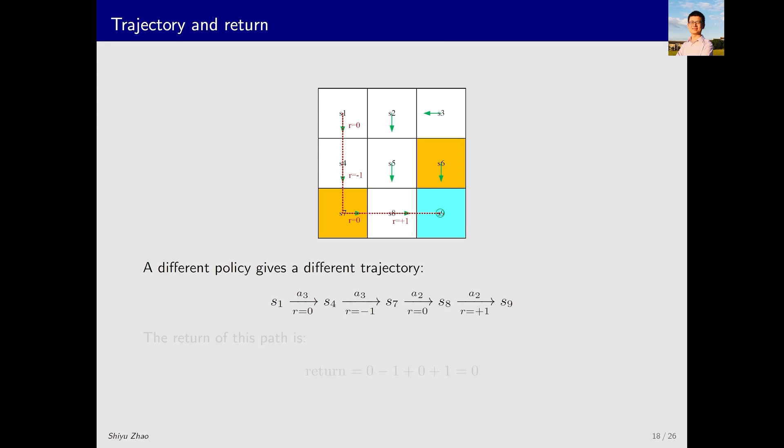If I change the policy, starting from here and following such a policy, I move downwards, then downwards again, and then to the right I will follow such a trajectory. Different policies will result in different trajectories. What would be the return corresponding to this trajectory? Here, I receive 0, then negative 1, then 0, and finally positive 1, and then they sum up to 0.